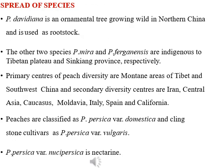Peach came to the New World with explorers of the 16th to 17th centuries, with the Portuguese introducing it to South America and Spaniards to the North Florida coast of North America. Now let's talk about the spread of species. Prunus davidiana is an ornamental tree growing well in Northern China and is used as rootstock. The other two species, Prunus mira and Prunus ferganensis, are indigenous to the Tibetan plateau and Xinjiang province respectively. There are two main centers of diversity of Peach: primary centers in Tibet and Southwest China, and secondary centers including Iran, Central Asia, Caucasus, Moldavia, Italy, Spain, and California.